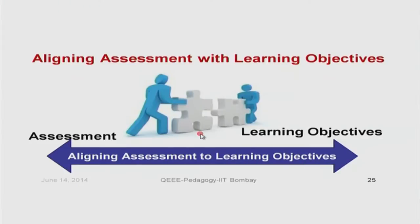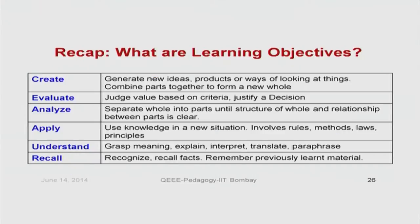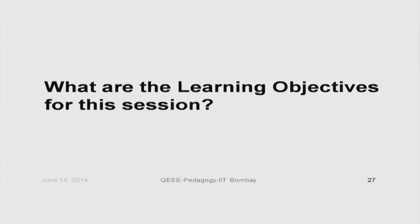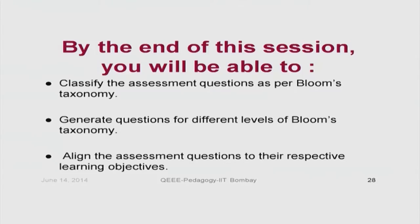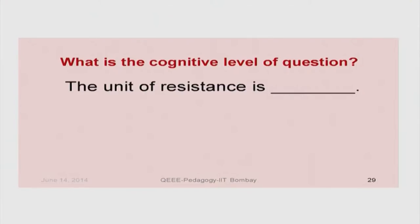If this mismatch gets created, it is certainly not beneficial for the teaching-learning process — that is exactly what we saw in the scenario we took up. Now let us focus on this issue. We are all familiar with the six cognitive levels of Bloom's taxonomy. Before we start understanding how to do this alignment, let us define the learning objectives for today's session. By the end of this session, you will be able to classify assessment questions as per Bloom's taxonomy and align assessment questions to their respective learning objectives.